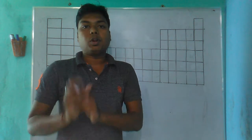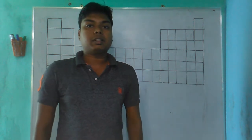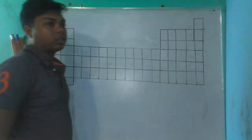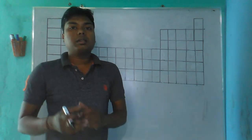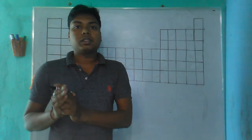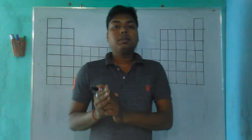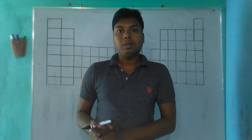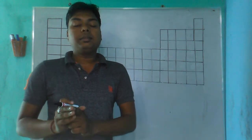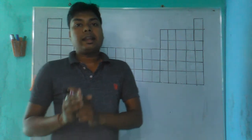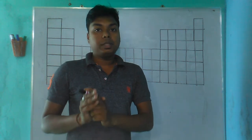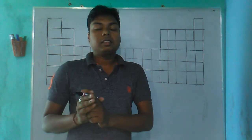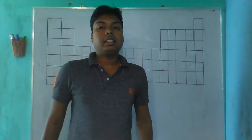In this video we have S, P, D and F blocks. The last electron determines the block: if the last electron is in the S orbital, it is the S block; if in P orbital, it is the P block; and D and F orbitals correspond to D and F blocks respectively.